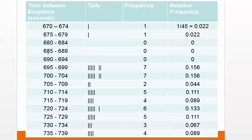StatCrunch won't let you build a frequency histogram or a relative frequency histogram from a frequency table — it requires you to use the raw data, which is why we had to paste it in. So now I'm going to go back to StatCrunch and use a lower class limit of 670 and a class width of 5. It's not the difference between the two class limit numbers; it's how much I'm going up each time: 670 to 675, and so on.